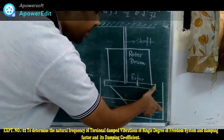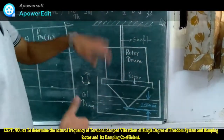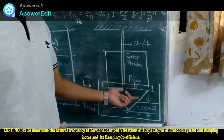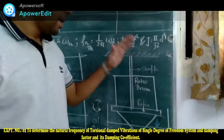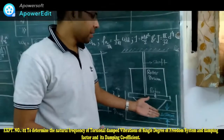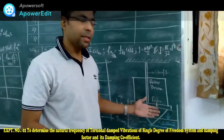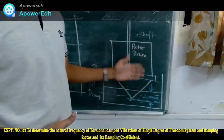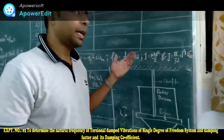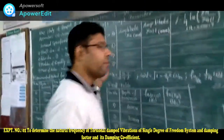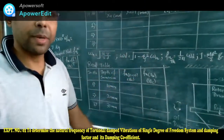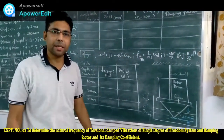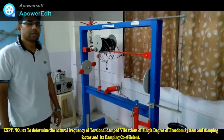There is a conical-shaped apparatus inserted inside the oil drum. We are going to control the depth of immersion, and after that we will find the effect of the damping factor. If we increase the depth of immersion, the damping factor increases, and we study the effect on the damped frequency of torsional vibration.